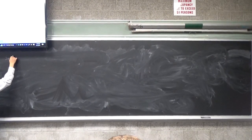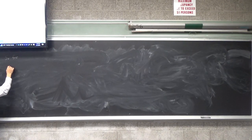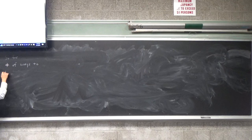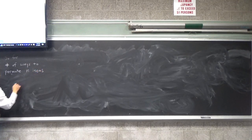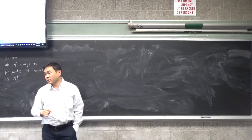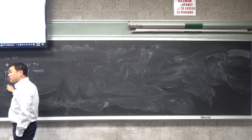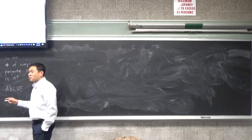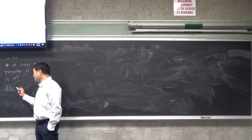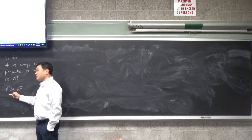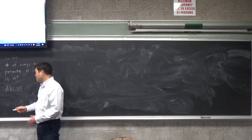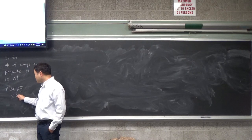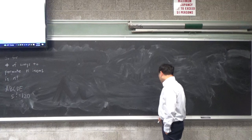So far, the number of ways to permute n items is n factorial. One of the examples was if you want to know how many ways you can permute a, b, c, d, e. You can write all the arrangements and if you write all of them down, how many different ones can you get? Five factorial, which is 120. So that's what we learned so far.